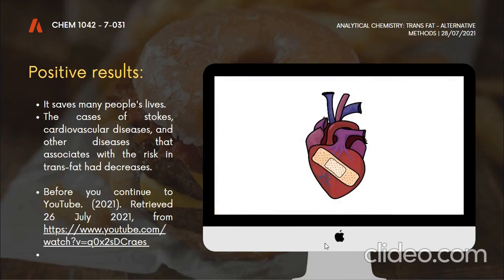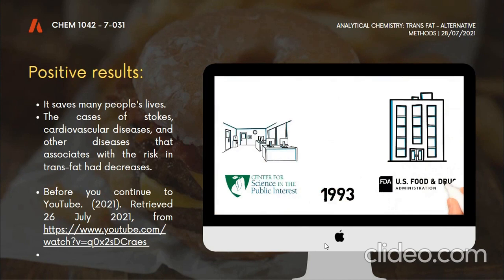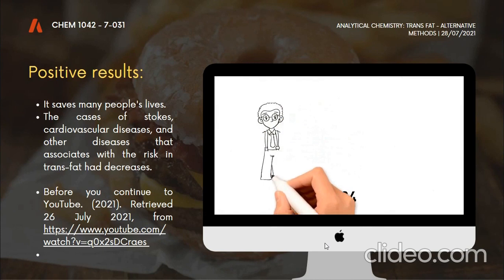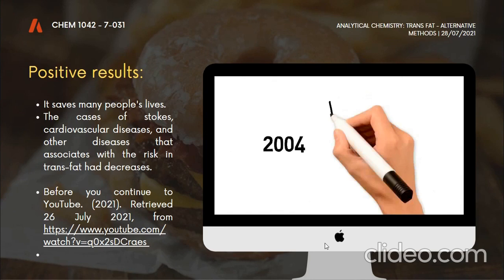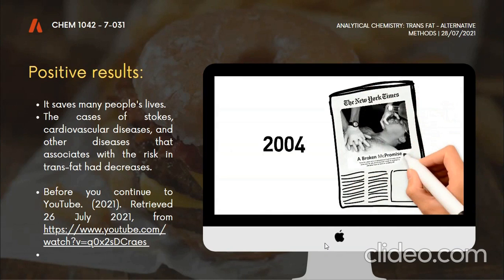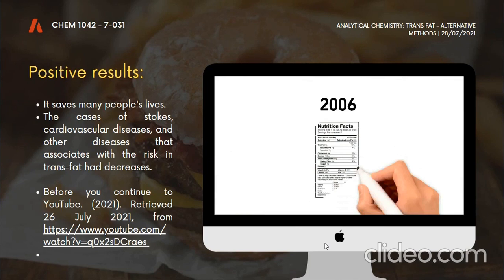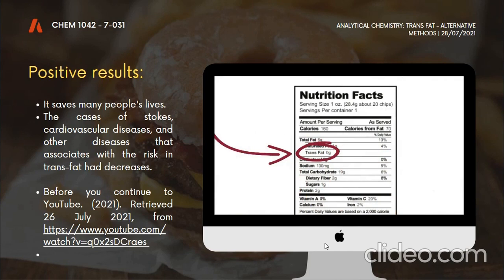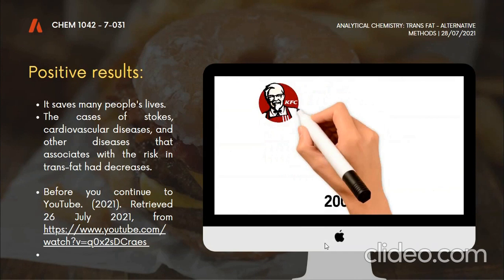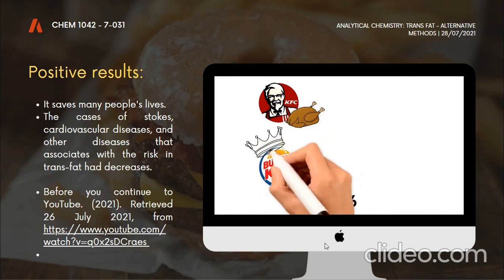That's why in 1993, the Center for Science and the Public Interest urged the U.S. Food and Drug Administration to label trans fat. Then in 2004, they petitioned the FDA to declare that partially hydrogenated oil is unsafe. That same year, a full-page ad was taken out in the New York Times, slamming McDonald's for quietly reneging on its promise to stop using partially hydrogenated oils. McDonald's later kept its promise and went trans fat-free. It wasn't until 2006 that the FDA required trans fat to be labeled on food packages. Manufacturers raced to get their products to zero grams, which removed a lot of trans fat from the food supply. Later that year, CSPI sued KFC and Burger King for failing to disclose their use of partially hydrogenated oil for frying chicken, fries, and other foods.